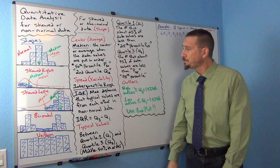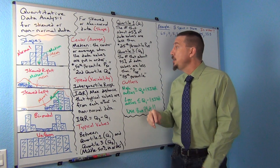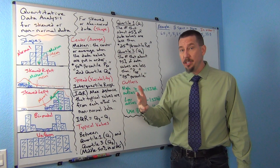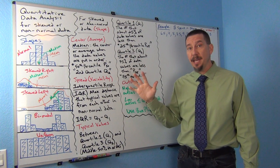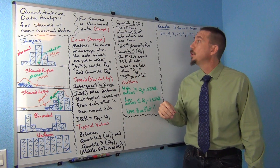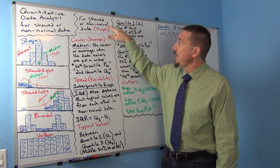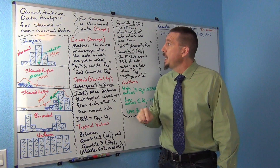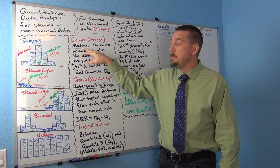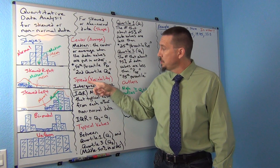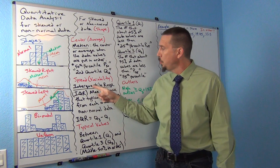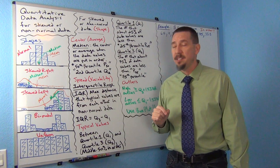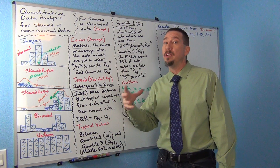Last time we said that when analyzing quantitative data you want to talk about shape, center or average, spread, typical values, and outliers. We have the same five things for non-normal or skewed data. The shape is skewed right, skewed left, or some other non-normal shape. The center or average we use is the median, not the mean. And for spread, we use the interquartile range, or IQR — this is the most accurate spread for non-normal data.